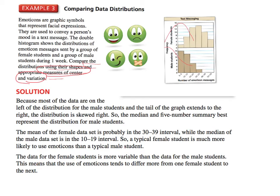Now we have to talk about variation. The data for female students is more variable than the data for male students because the use of emoticons differs more from one female student to the next. Most of the males are all grouped together, while the females have a wider range — it differs from one female student to the next.